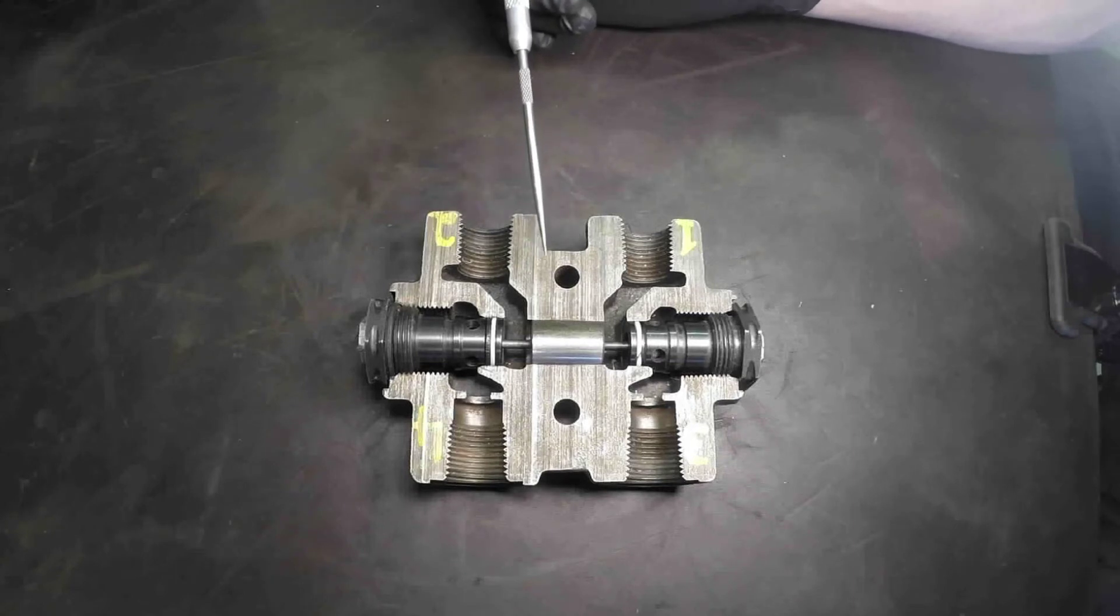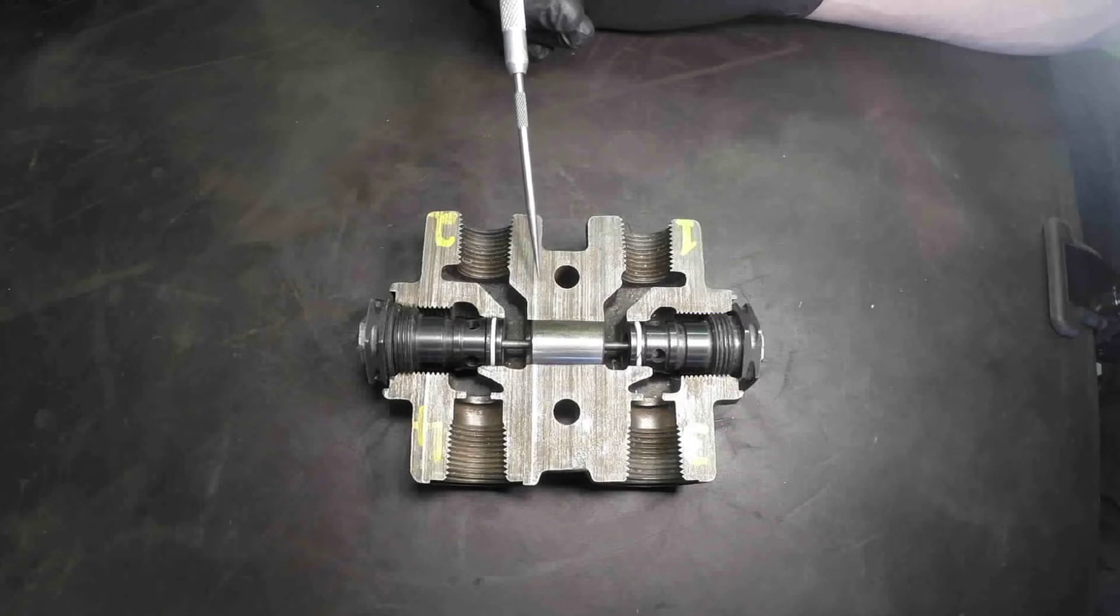Likely you would find this on an outrigger of a crane or on a picker truck, and the idea here is that we're going to create a lock or a more positive hydraulic seal than we would find in our directional control valve.